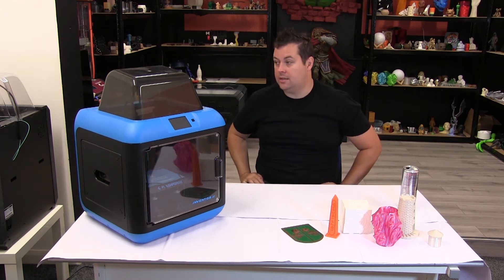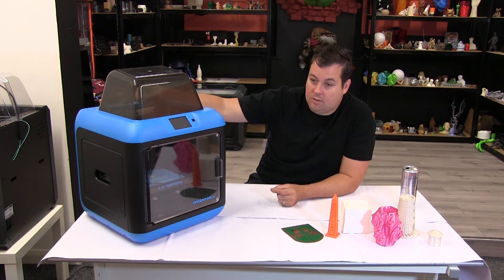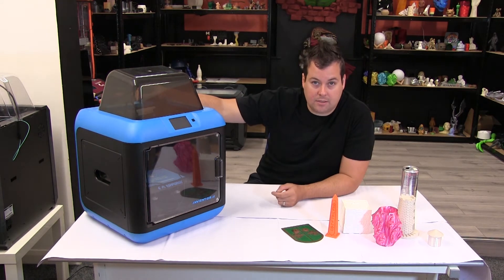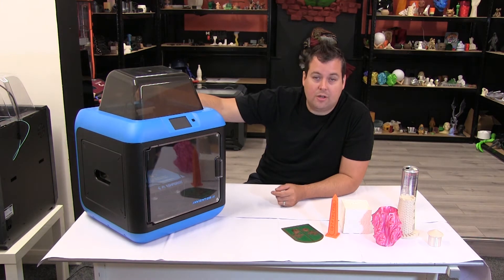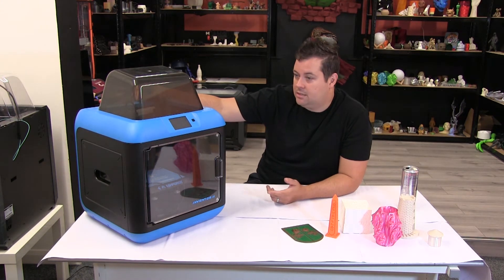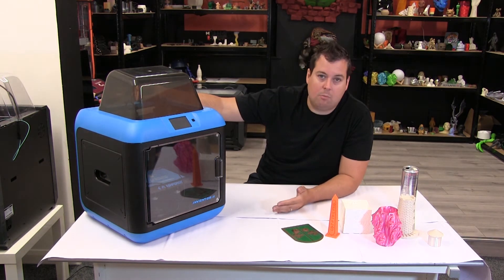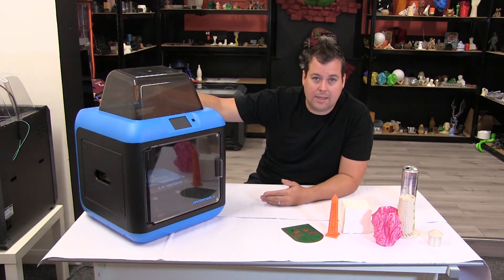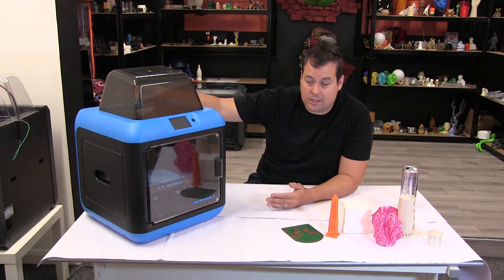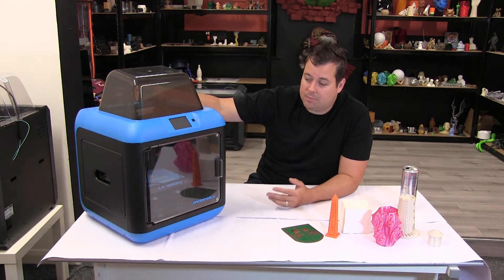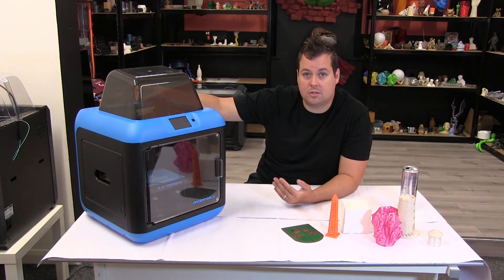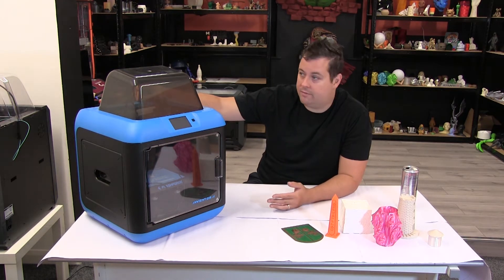It's a direct drive setup on the hot end, so it will print things like flexibles. However, the build plate is not heated, so you're somewhat limited with what you can get to adhere. ABS is a no-go, PETG would be tricky and probably wouldn't work, but if you're putting this into a makerspace, PLA is perfectly fine.